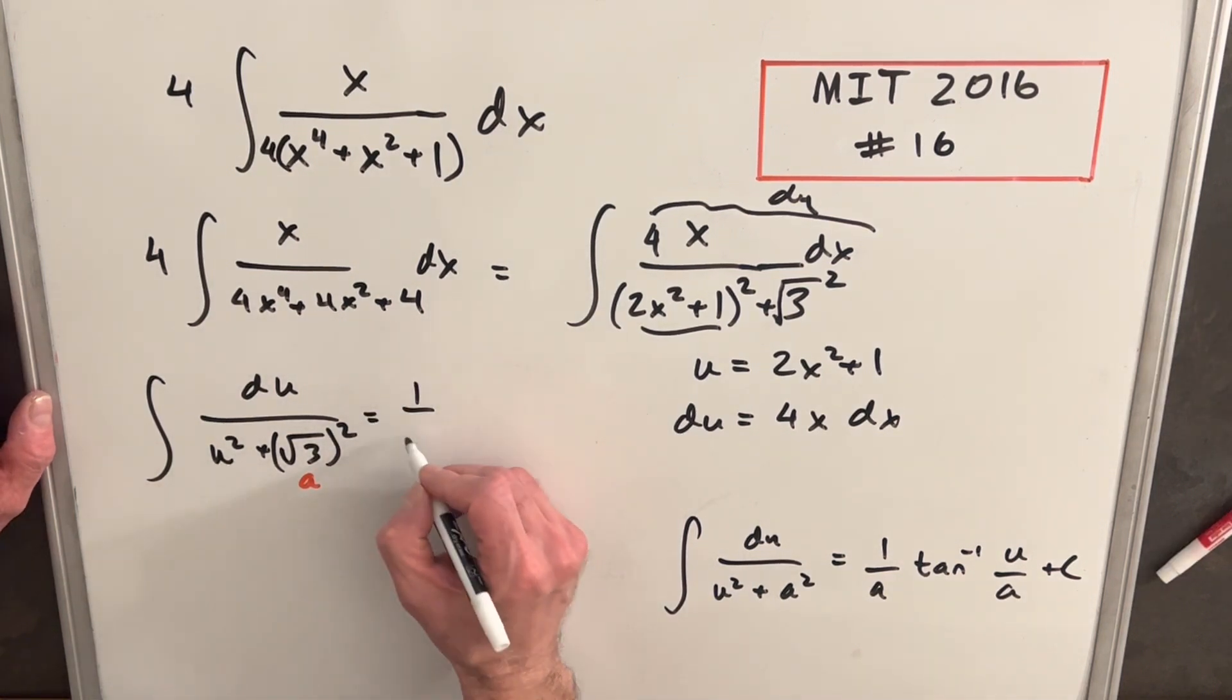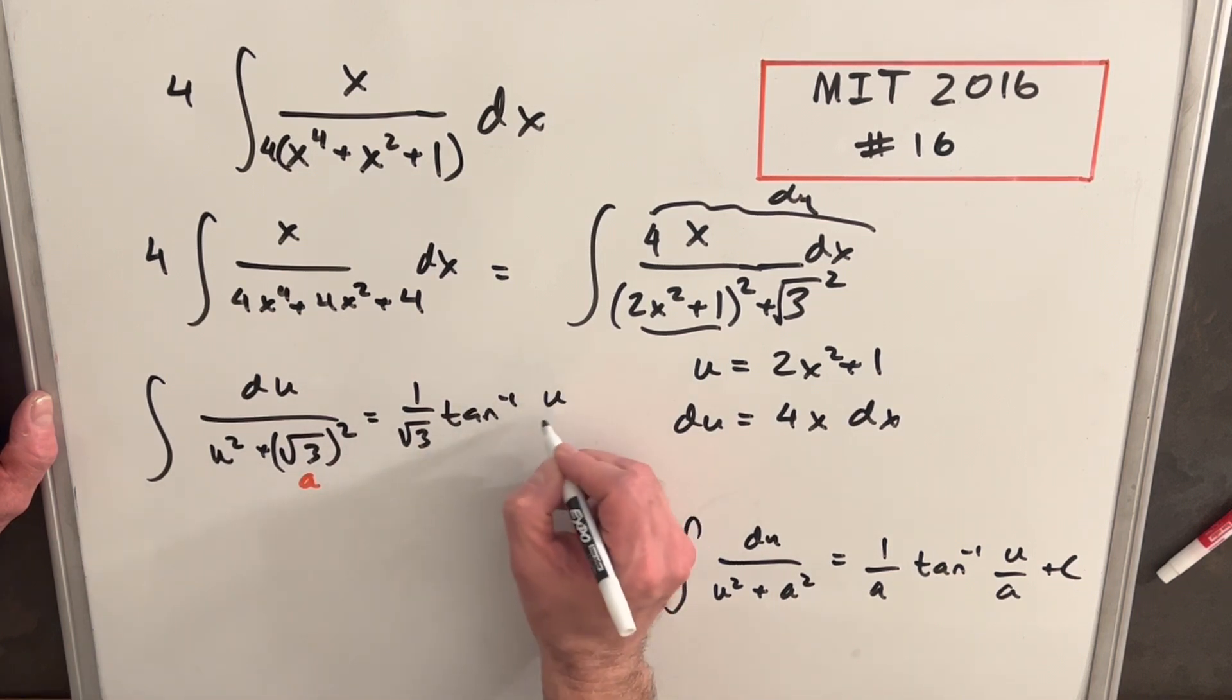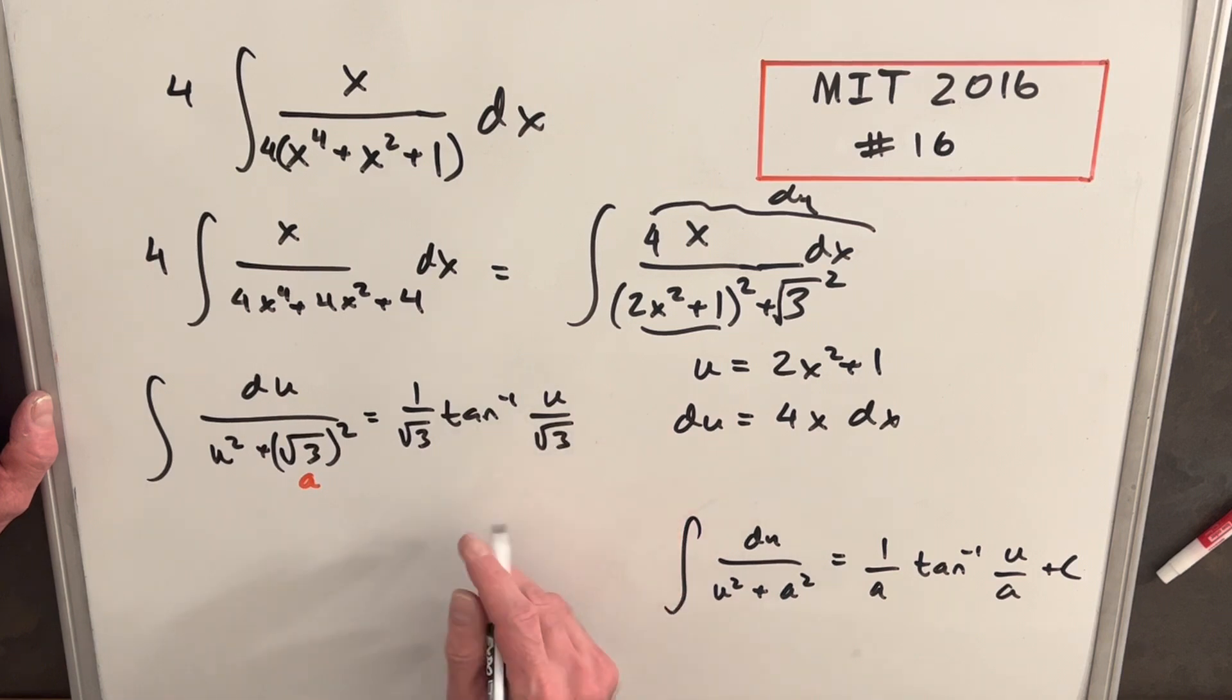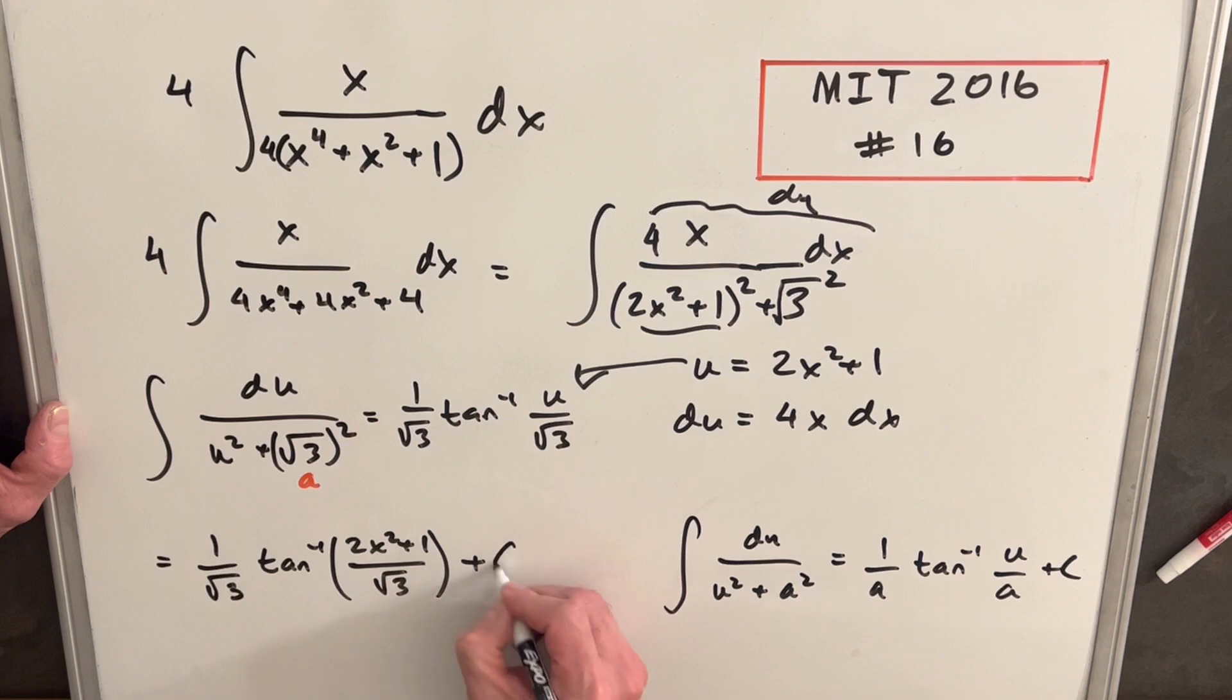And we're going to have 1 over square root of 3, tan inverse, our u over square root of 3 again. Now we can just back substitute for our final answer. And it's going to be 1 over square root of 3, tan inverse, 2x squared plus 1, all over square root of 3, plus c.